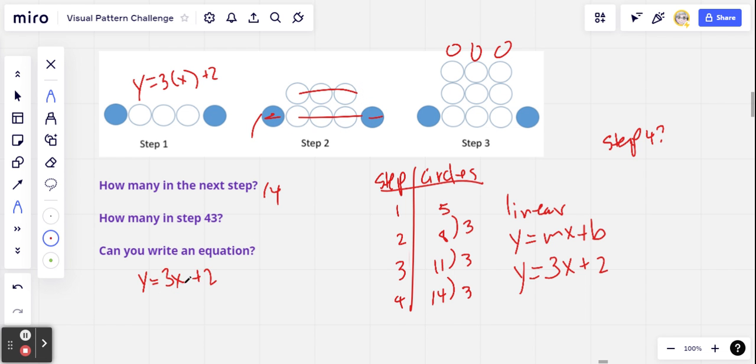In step 3, I'd be looking for 3 groups of 3. Right there. Plus 2 more. So that's how this equation works in this pattern.